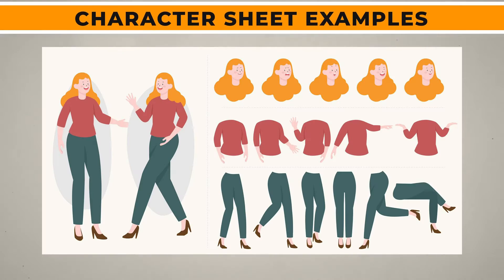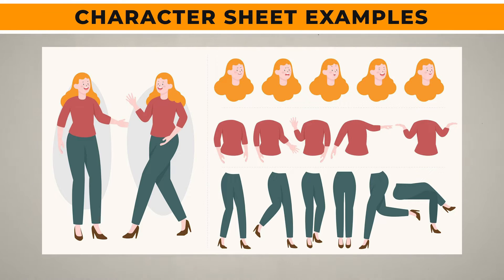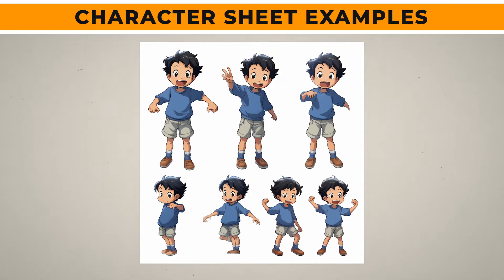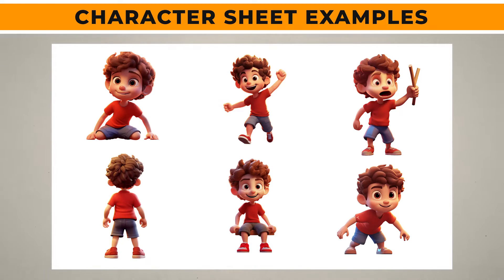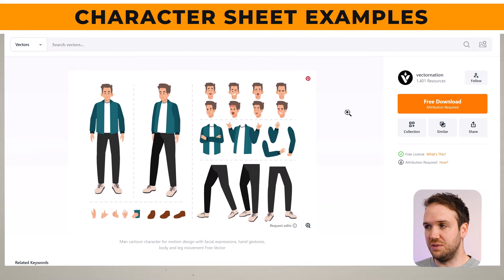What you really want is a character sheet. A character sheet has the same character in different poses with different expressions. We will be training a model so that when we give it a prompt, it can look through all those images and say — I need him in a running pose, or he looks angry — and it has those reference images to work from. This character file is free to use, but it does say attribution required, so thank you to Vectornation for creating this file — I'll leave a link below.